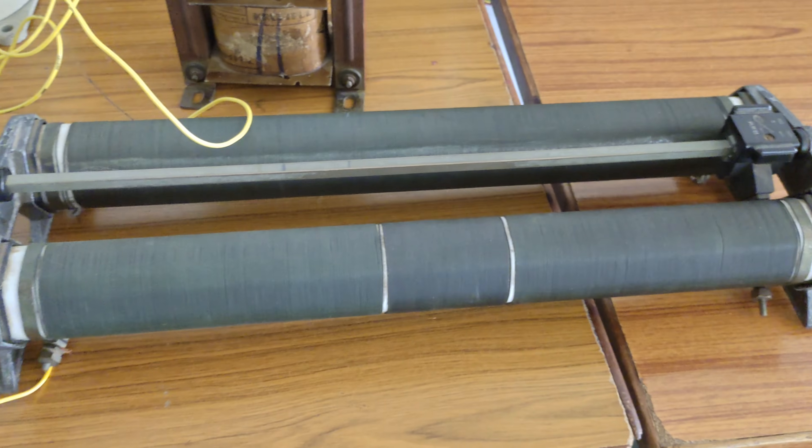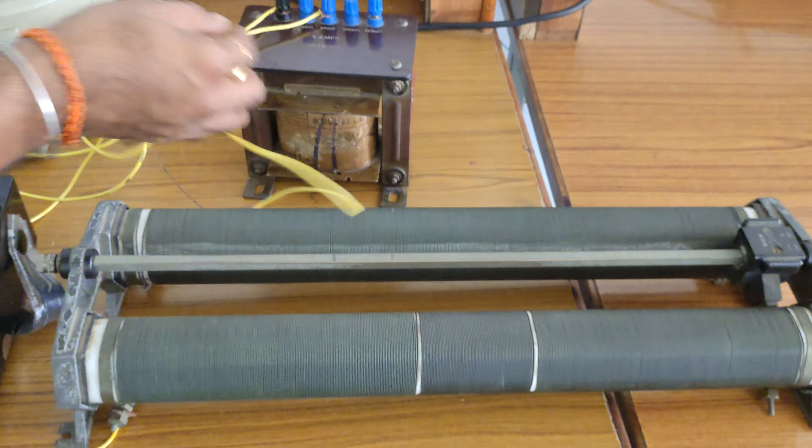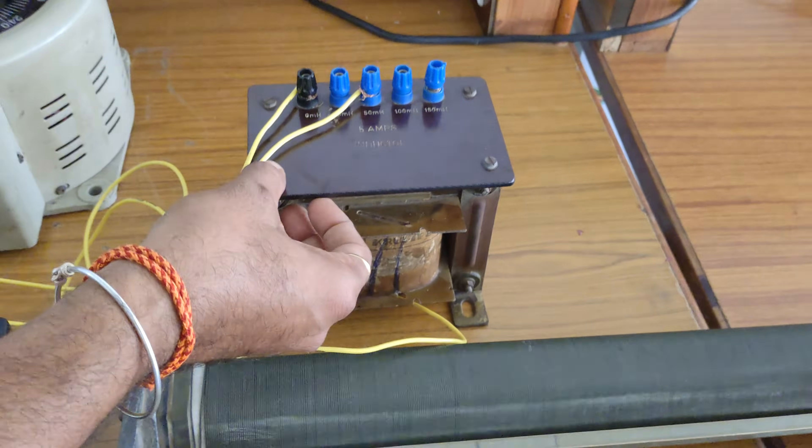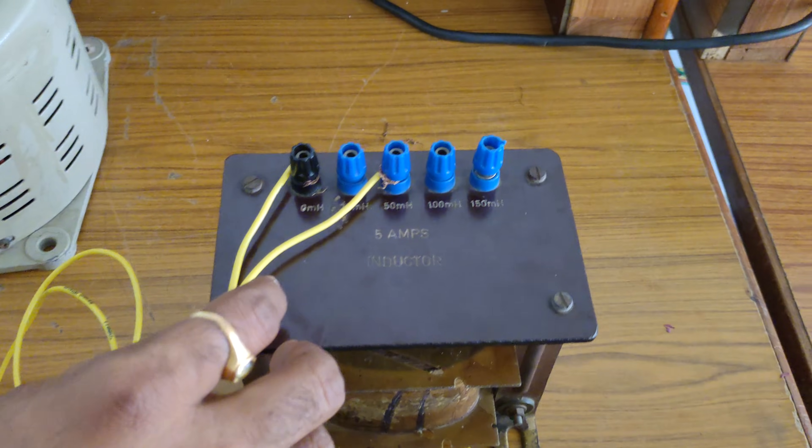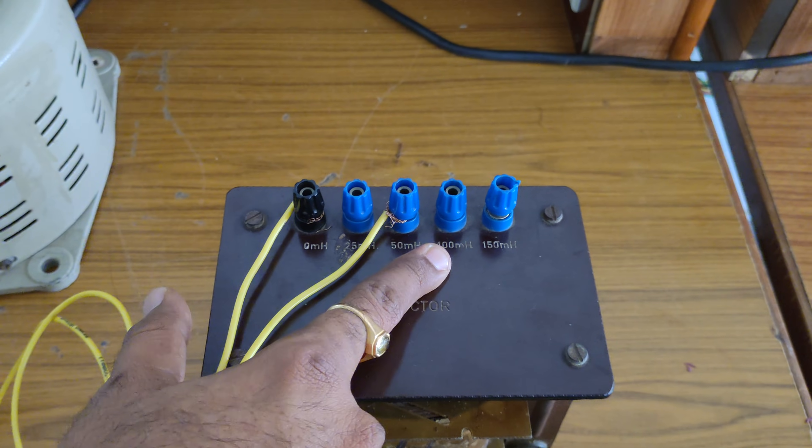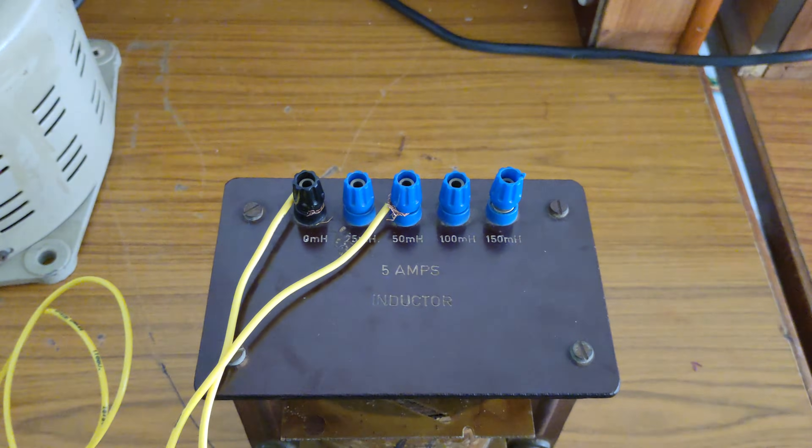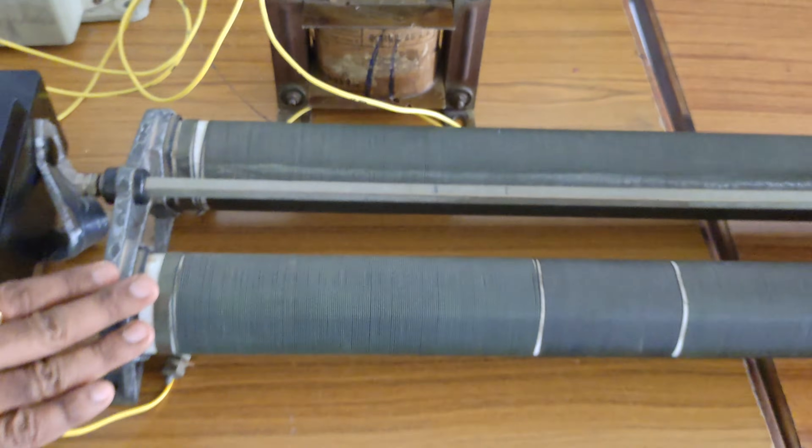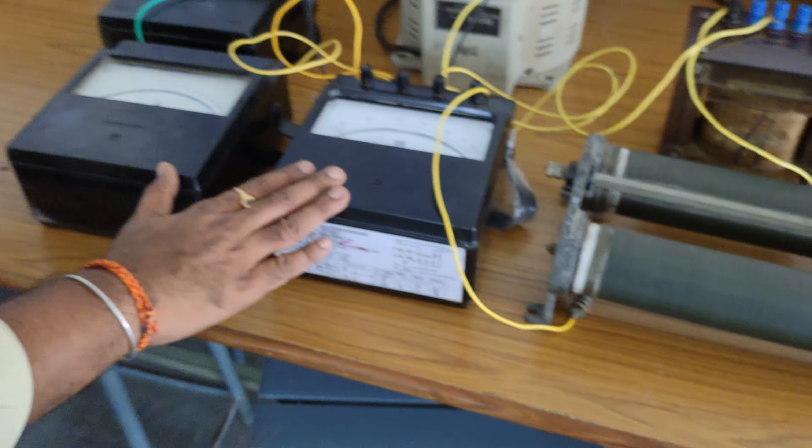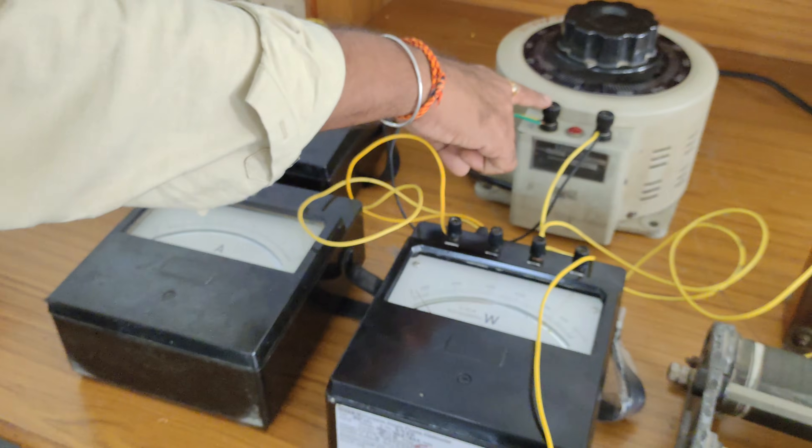And also loads here now. One of the load here is resistive load having 100 ohms followed by inductive load. Different ranges will be here, one of the range is 50, 100 millihenry, 150 millihenry. Inductive load, resistive load, wattmeter, ammeter, voltmeter followed by variac here.